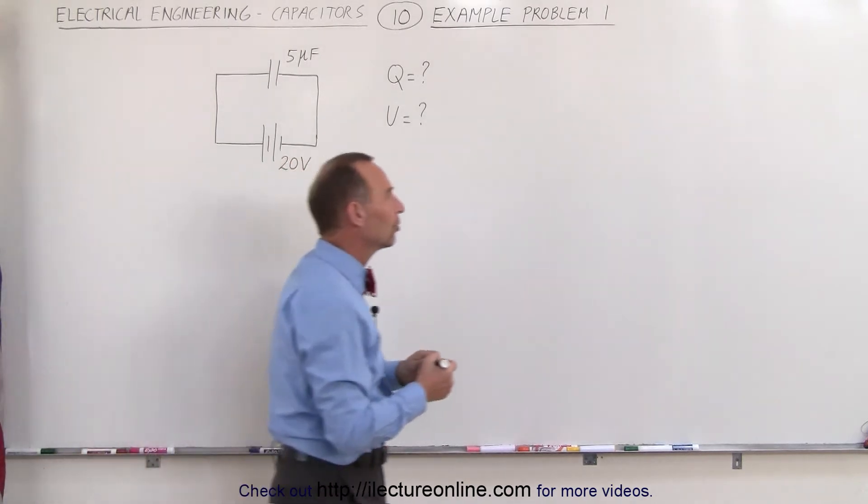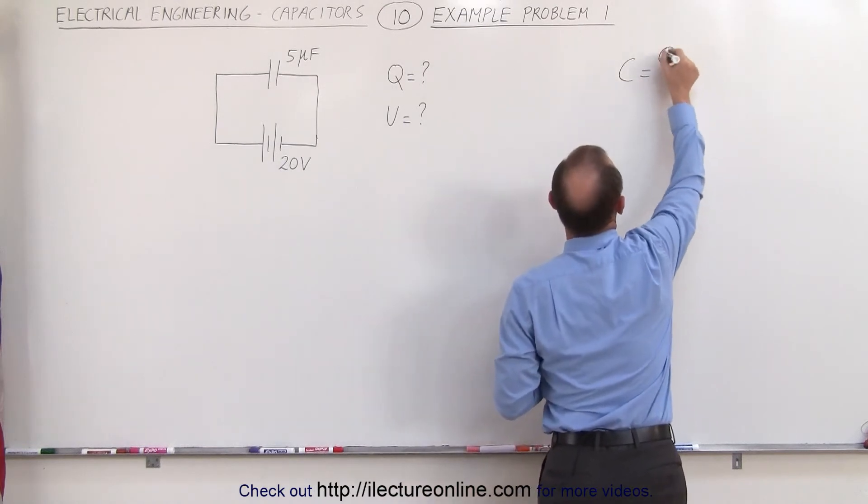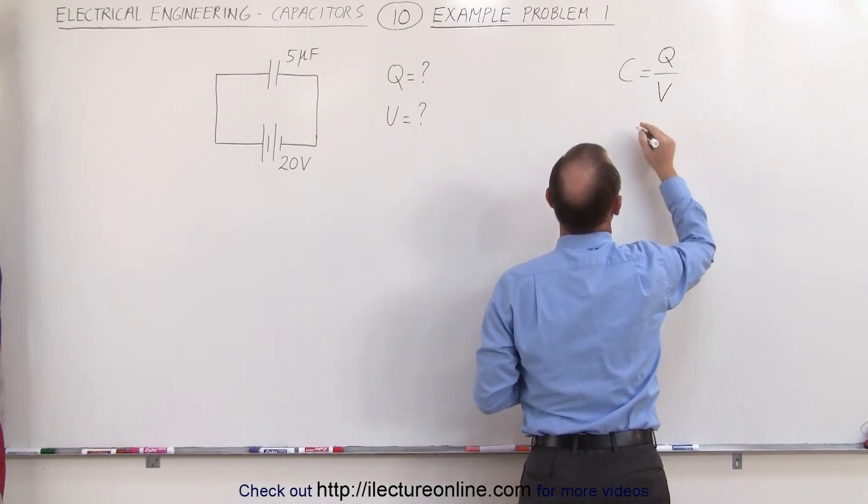Using the equation, the definition of capacitance being equal to the charge collected on the capacitor divided by the voltage across the capacitor, we can then see that Q is equal to C times V.